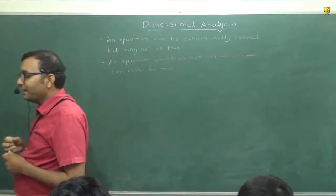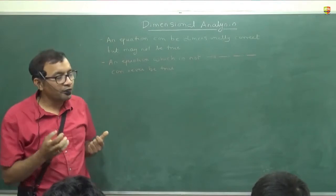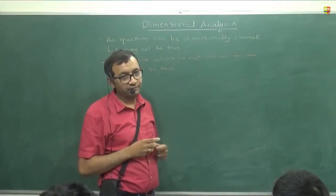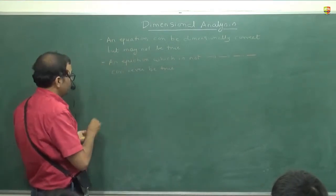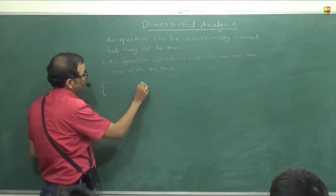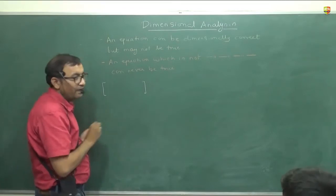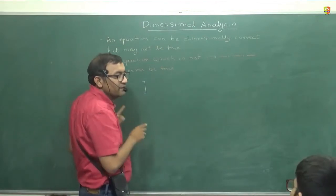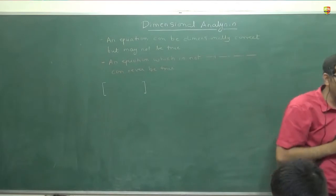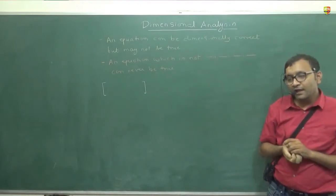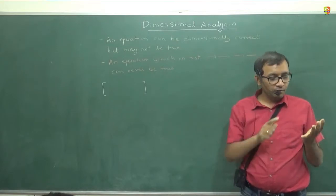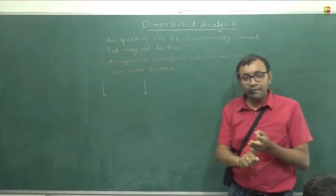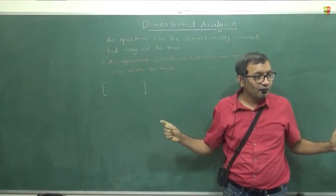Two physical quantities cannot be added whose dimensions are different. Okay? Now when we write the dimension of anything. When we write dimension of anything. For example, let's say dimension of speed. Unit is meter per second. The way we write dimension is this. We take a square bracket like this. And you know ideally we should write seven dimensions over here. Universe has seven dimensions.